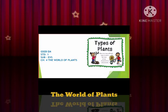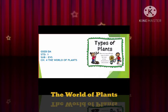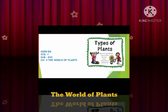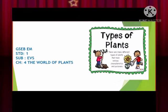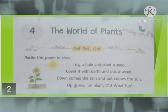In last class we completed chapter number three, the World of Animals. You remember the World of Animals — I explained about it. So today I am going to explain our new chapter, the World of Plants. I am going to explain different types of plants. Let me start our new chapter reading part and your homework assignment.